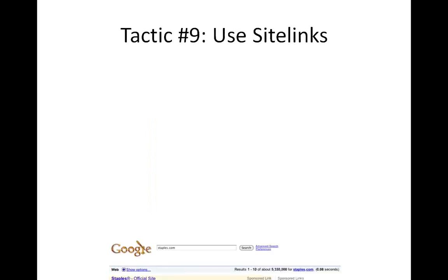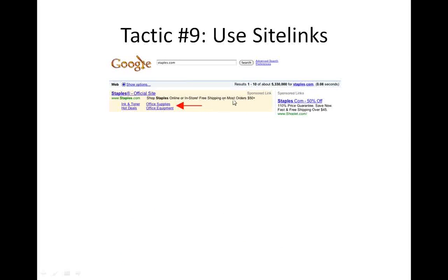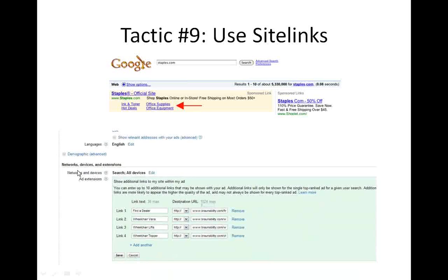You can use site links. Right here we have a sponsored link for Staples, and they have links to office supplies, hot deals, and other sections. They have links to specific sections of their website. To enable this, go to your campaign settings, click on 'Ad Extensions,' and enable site links from there. You can write different text for all the different URLs you want to point people to. You can select up to 10, but Google AdWords will only show four.